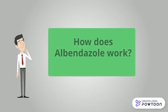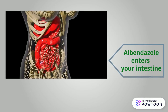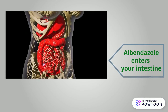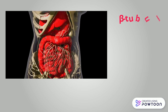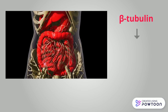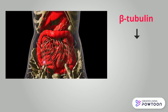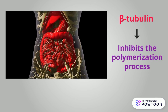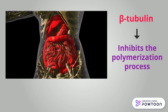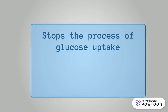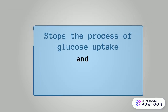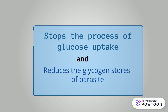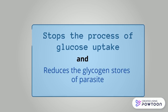Now let's see how it works. When you take this drug, it enters your intestine and binds on the parasite microtubular protein, which is called beta-tubulin. As soon as Albendazole binds on tubulin, it inhibits the polymerization or multiplication process. This drug also stops the process of glucose uptake in the parasite and reduces its glycogen storage.